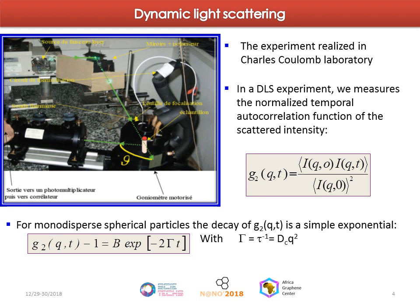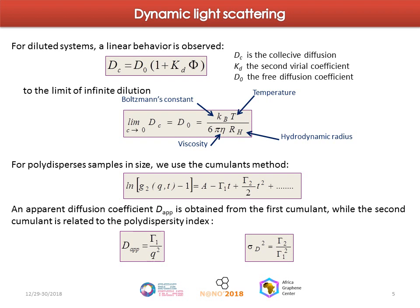To study our system, we used the technique of dynamic light scattering, characterized in Charles Coulomb Laboratory. In our DLS experiment, we measure the normalized temporal autocorrelation function of the scattered intensity. In the dilute region and for monodisperse particles, the decay of G2(Q,t) is a simple exponential. The linear variation of Q² defines the collective diffusion coefficient Dc, which is in general a function of concentration. By using D0, one can obtain RH, the hydrodynamic radius, using the Stokes-Einstein relation.